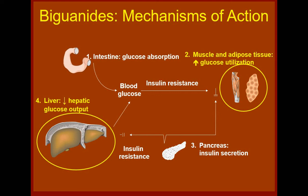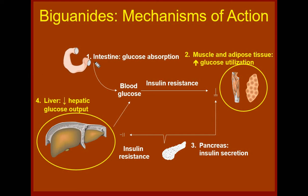Let us revise the mechanism of action. The two major mechanisms are: first, increase in peripheral utilization of glucose; and second, most importantly, reduction in hepatic glucose output. Some books also suggest that this drug can reduce glucose absorption, but this is not a very important action clinically for biguanides. Biguanides also have an antagonizing action on glucagon, which can be considered an important pharmacological action. But the most important clinical action remains the reduction in hepatic glucose output by inhibiting gluconeogenesis.